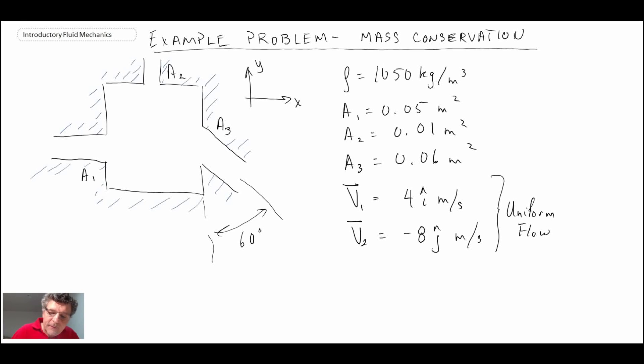So we're given that information and we are told to find V3, which is the velocity at area 3. So that is the unknown for the problem. And the control volume is specified here, basically right around the box or the mixing chamber that we're looking at.